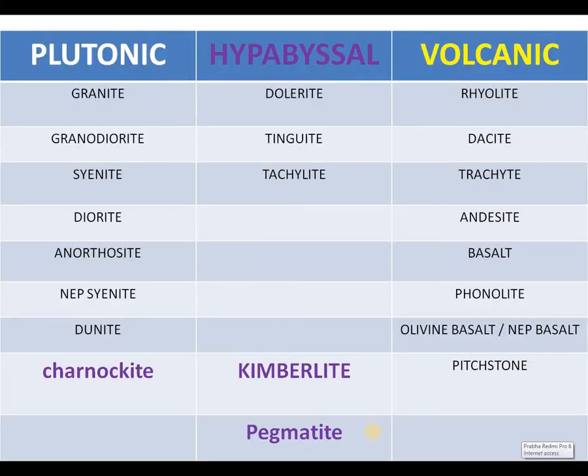The table shows granite, granodiorite, syenite, diorite, anorthosite, nepheline syenite, dunite, and charnockite as best examples for plutonic igneous rocks. Whereas dolerite and related rocks are mentioned under hypabyssal igneous rocks. Rhyolite, dacite, trachyte, andesite, basalt, phonolite, olivine basalt, and nepheline basalt are mentioned under the category of volcanic igneous rocks.